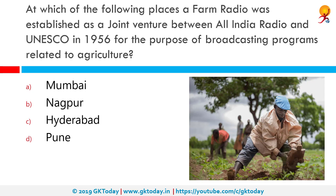At which of the following places was a farm radio established as a joint venture between All India Radio and UNESCO in 1956 for the purpose of broadcasting programmes related to agriculture? This was established in Pune. This was an initiative by UNESCO along with the All India Radio Service of the Indian Government for agricultural purposes and broadcasting.